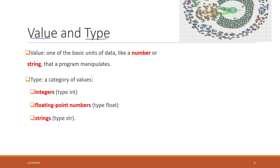Different categories of values: we have integers, which are whole numbers; we have floats, which are numbers with decimals; and we also have strings, which are text. Those three data types are: int for integers, float for floating point, and str for strings.